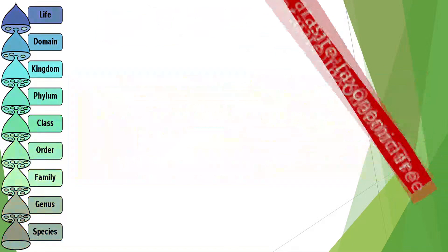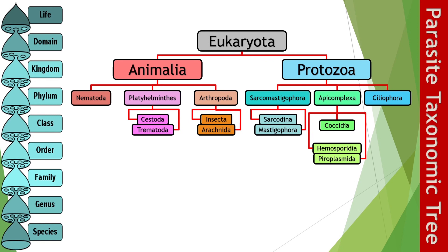This is the taxonomic tree that we will use for the rest of the lecture. I made this by myself doing a lot of research, so I hope this simplified tree does the topic justice. Medically important parasites are primarily eukaryotic organisms, or organisms with a membrane-bound nucleus. They are then divided into two big kingdoms. Kingdom Animalia houses the more cellularly complex worms and quote-unquote insects. In this kingdom, we have roundworms, flatworms, and arthropods.